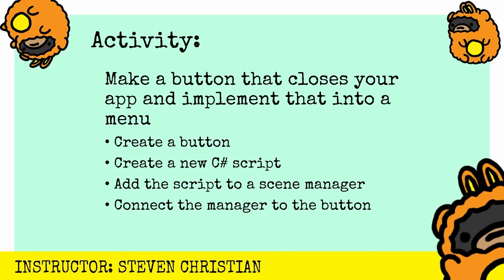Now it's time to apply what we learned with an activity. In this video we're going to make a button that closes your app and implement it into a menu. The steps are: create a button, create a new C# script, add the script to a scene manager, and connect the manager to the button. Give it a try and post a reply in the comments to let me know how it goes, or follow along as I work through this activity in real time.